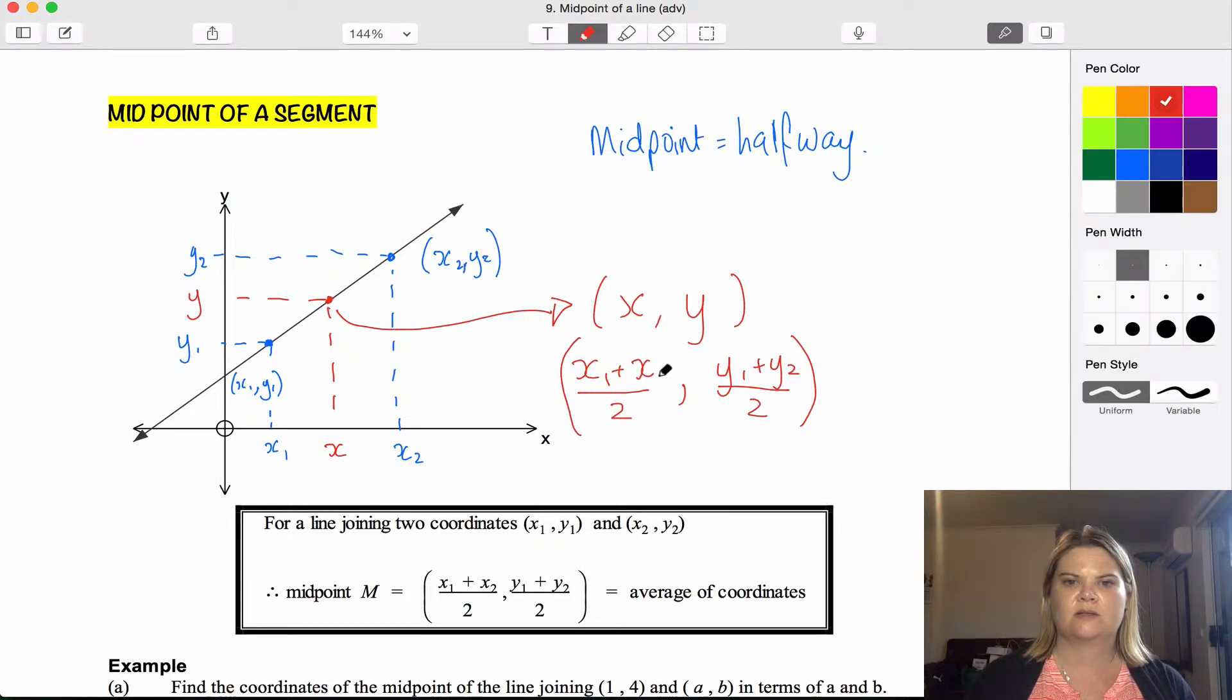x1 plus x2 and y1 plus y2. Make sure you correct that error in your notes as well. This is a correct formula: comma y1 plus y2 over 2. So this is a kind of weird formula because it's got the comma in the middle of it.